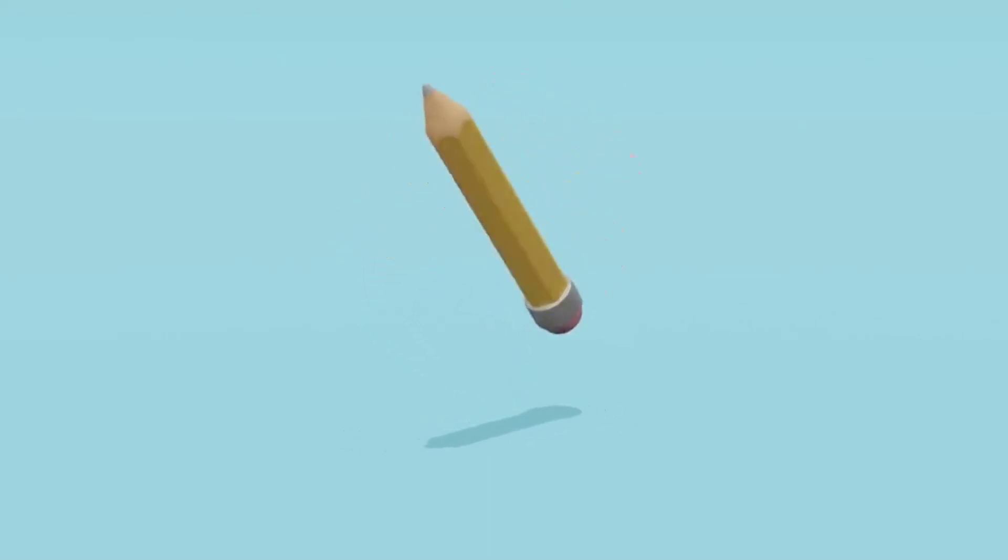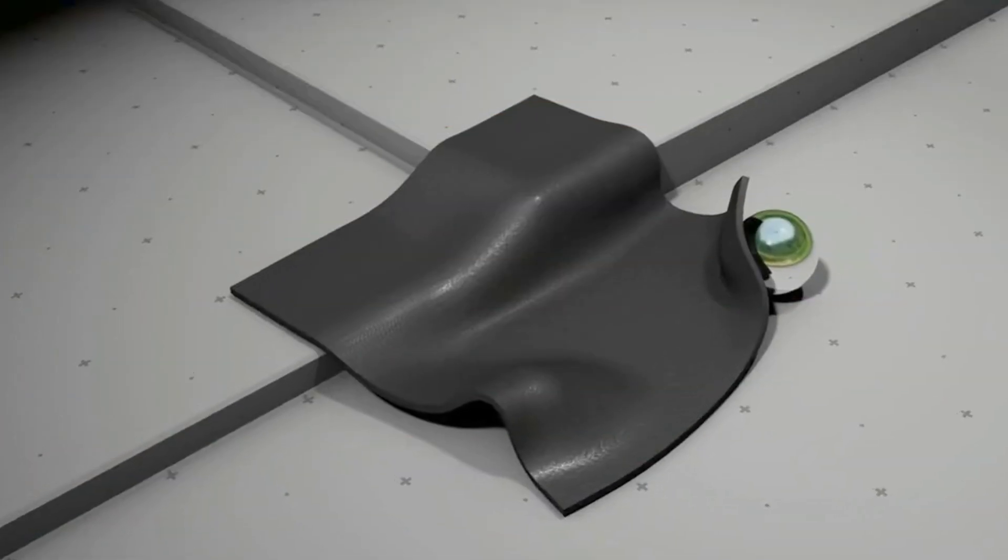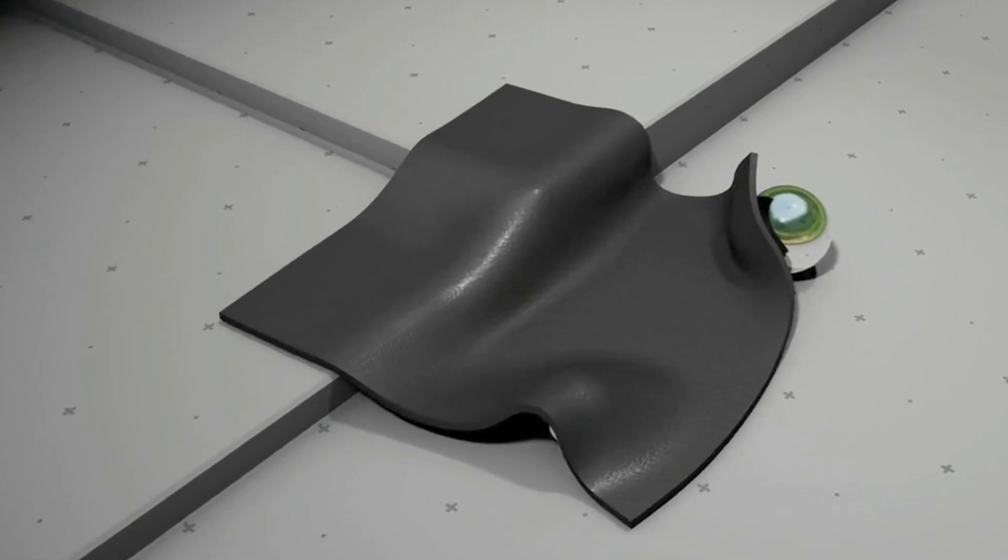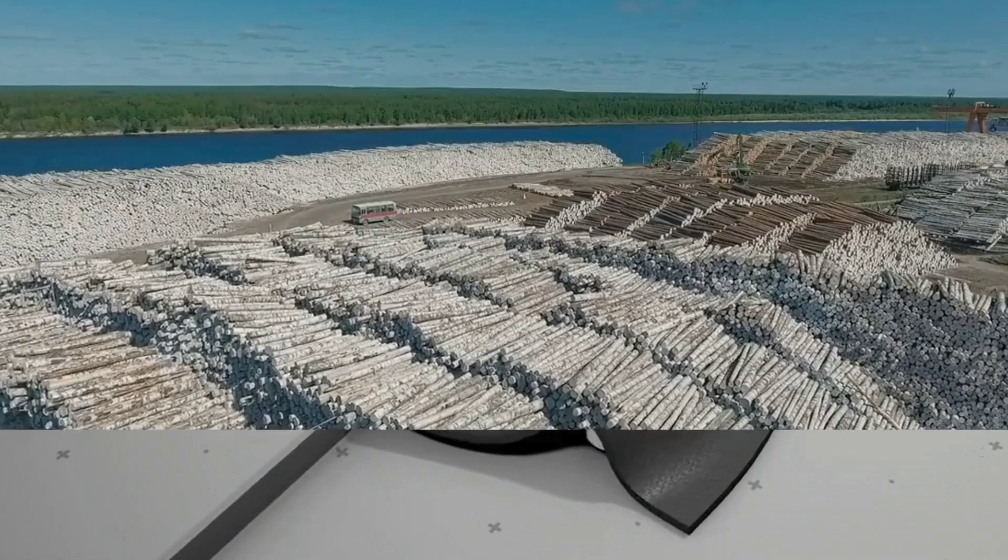Ever wondered where the simple yet essential pencil comes from? Its journey begins with raw materials, graphite, clay, and wood. Let's delve into the details.